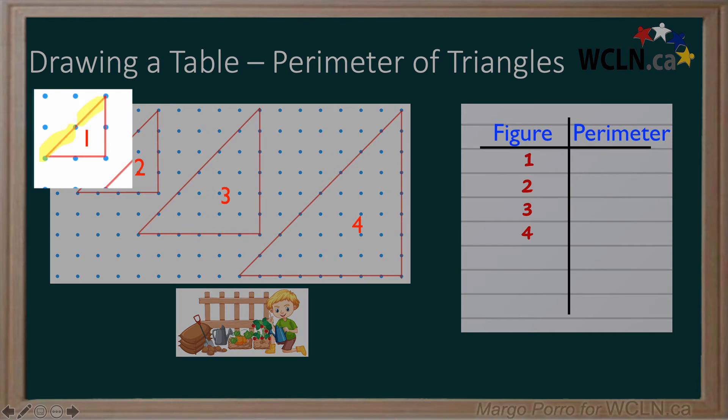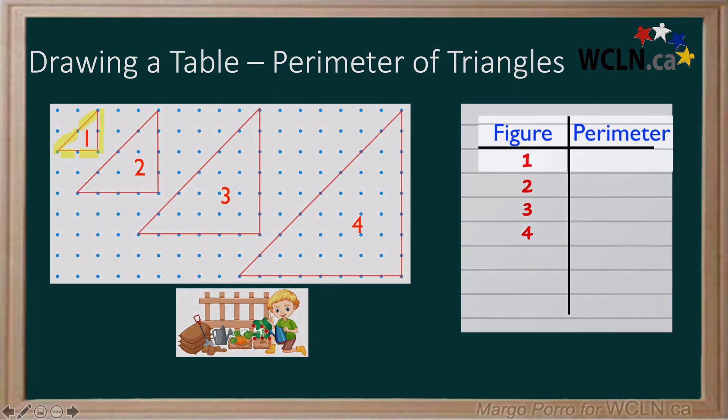Count the perimeter or distance around the first triangle. One, two, three, four, five, six. We'll put this on the chart.